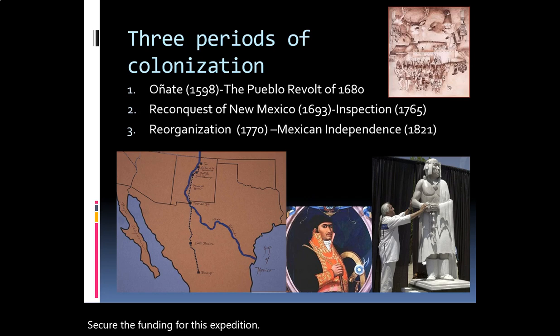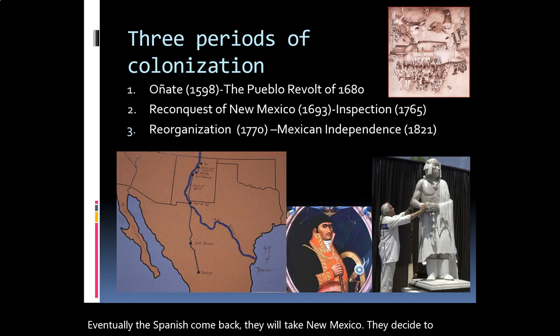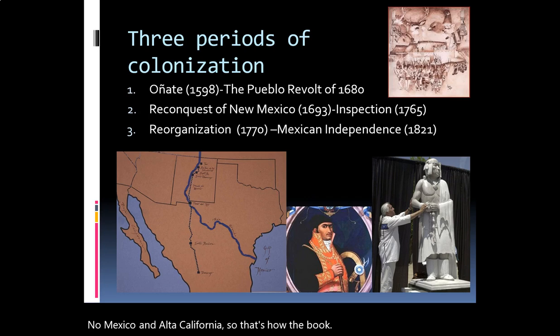He establishes a colony in New Mexico. Things don't go well and eventually that leads to the Pueblo Revolt of 1680, one of the most important revolts in northern New Spain. We're going to talk about this later. Eventually the Spanish come back, retake New Mexico, and reorganize the territory. We'll also cover all the way through to Mexican independence and what happens with people living in Texas, Nuevo Mexico, and Alta California. That's how the book is divided.